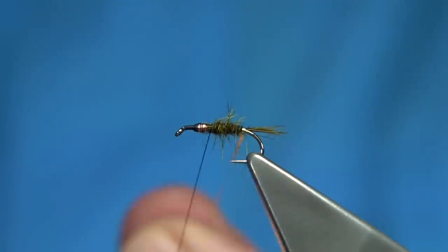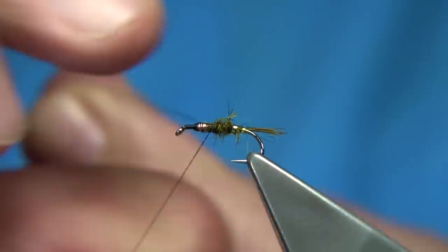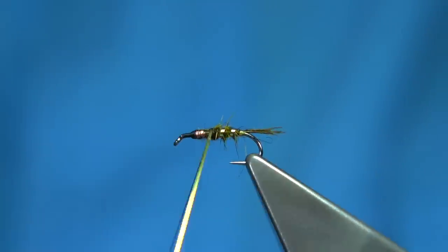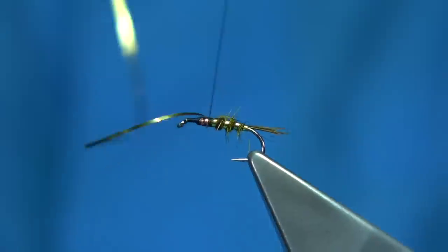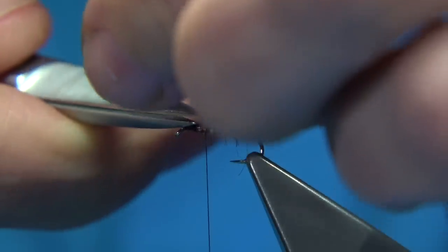Remove the excess. Bring your rib up. Usually I like to do a straight turn at the back, and then work our way up. I'm going to do about four turns. Catch this in. Take away the excess.